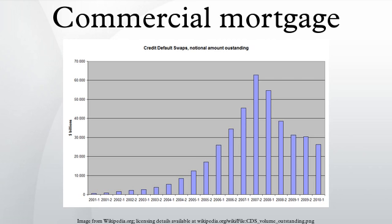Amortization: Commercial mortgages frequently amortize over the term of the loan, meaning the borrower pays both interest and principal over time, and the loan balance at the end of the term is less than the original loan amount. However, unlike residential mortgages, commercial mortgages generally do not fully amortize over the stated term, and therefore frequently end with a balloon payment of the remaining balance, which is often repaid by refinancing the property.